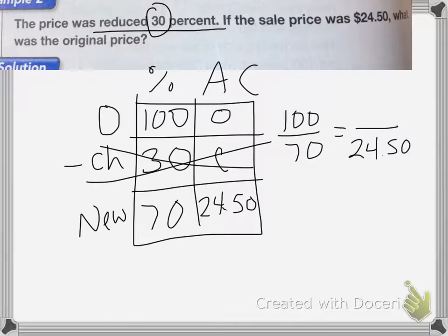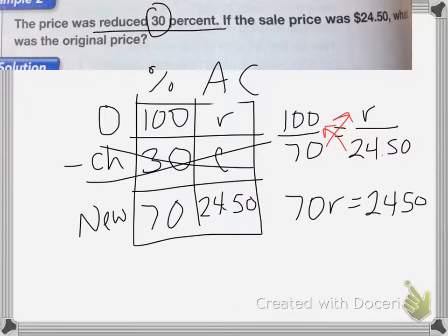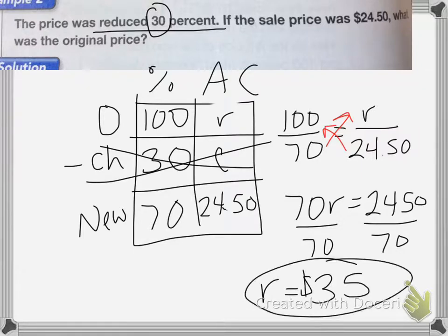So my proportion will be 100 over 70 equals my original amount over $24.50. I'm actually going to change this letter because that looks too much like a zero. We're going to change it to R. So we do cross products. I get 70R equals 100 times $24.50. $24.50 is $2,450. Divide both sides by 70. So R is equal to $35. $35 was the original cost.